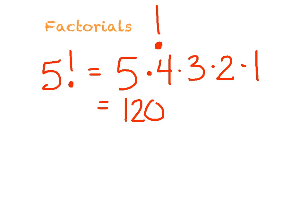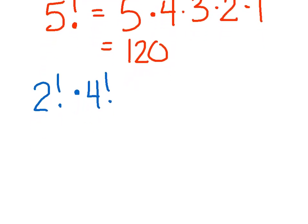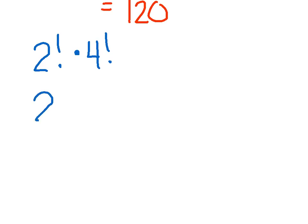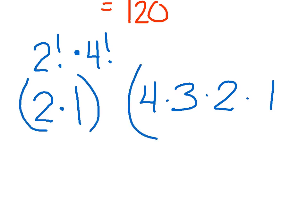I'll just try another one. If I said two factorial times four factorial. Alright, so let's start with two factorial. Two factorial is telling me two times one. And four factorial is telling me four times three times two times one. And it wants me to take my two factorial and multiply it by my four factorial. So basically, I'm just multiplying all of these numbers together. So two times one is two, four times three times two times one is 24 for a total of 48.